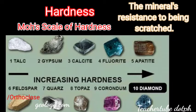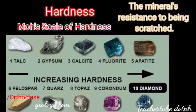Hardness refers to a mineral's resistance to being scratched. The harder ones are difficult to scratch, while the softer ones are less resistant. Friedrich Mohs, a German mineralogist, prepared a scale of hardness numbered 1 through 10 in increasing hardness: 1 talc, 2 gypsum, 3 calcite, 4 fluorite, 5 apatite, 6 orthoclase, 7 quartz, 8 topaz, 9 corundum, and 10 diamond.